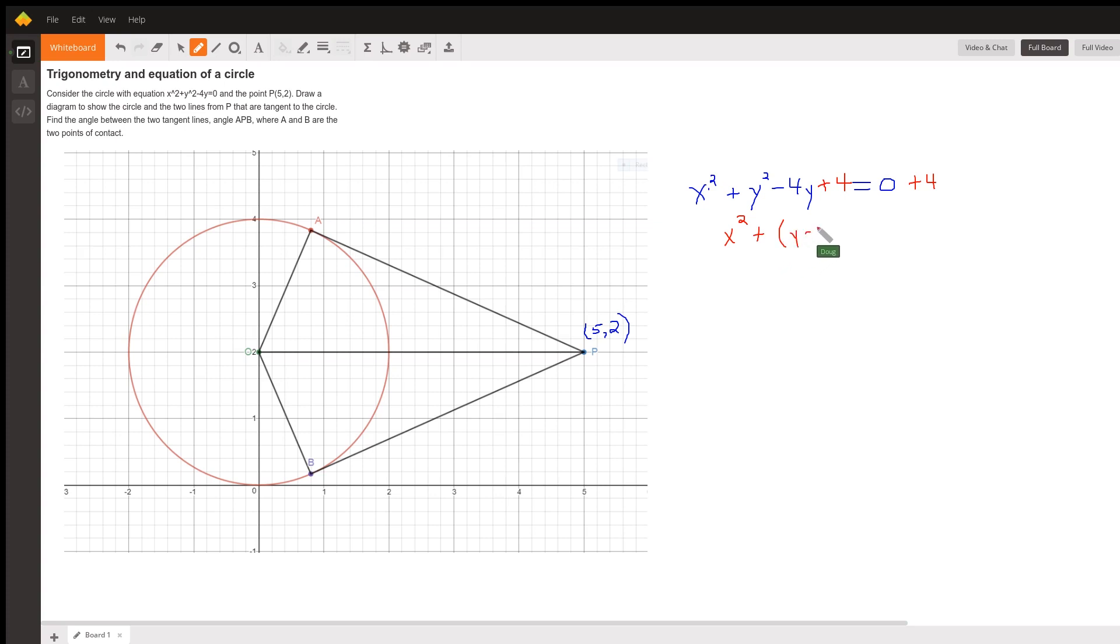This tells you that the center of the circle is at (0, 2), which I have marked with the letter O, and that the radius of the circle is 2.